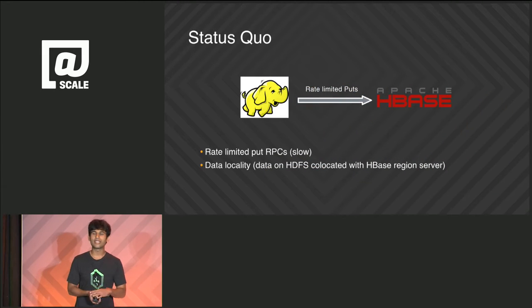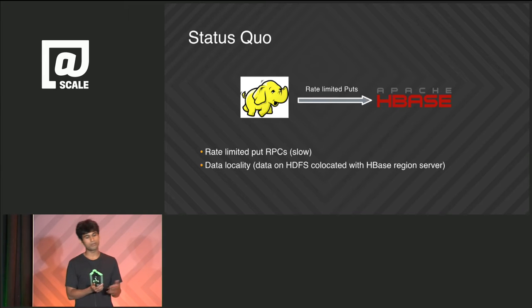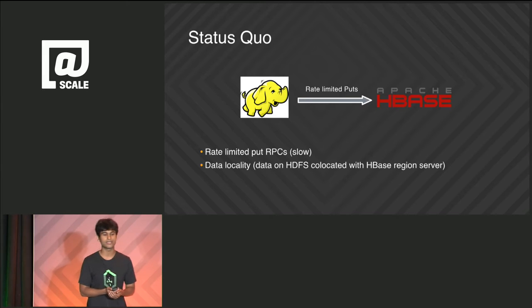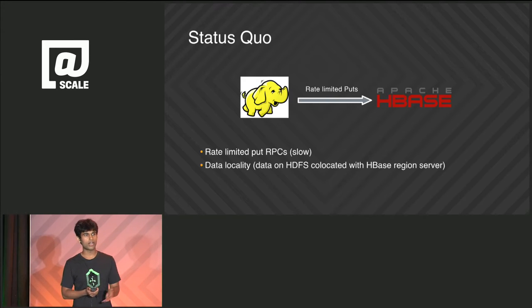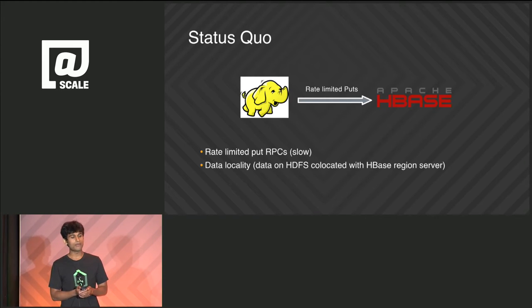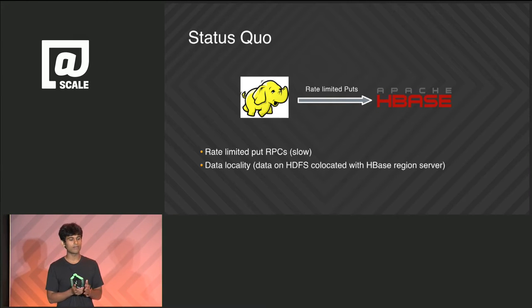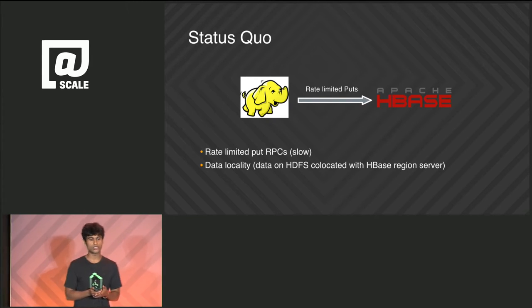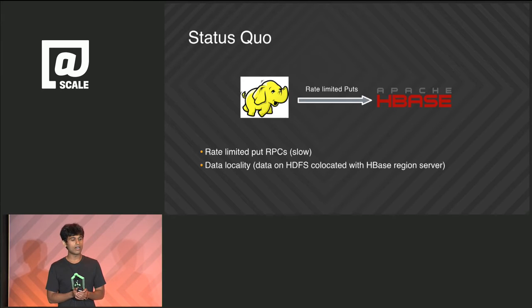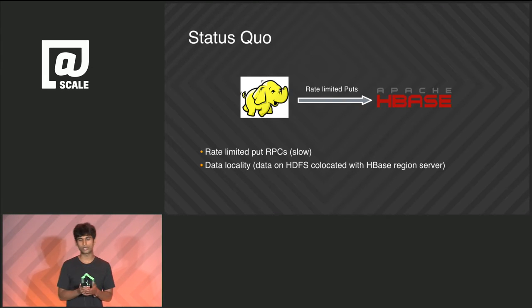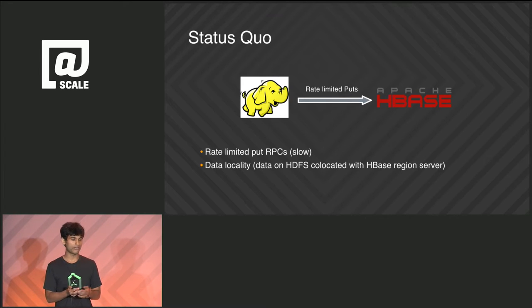Now I'll talk about some existing technologies we were previously using at Pinterest for serving this kind of data. We started off with our Hadoop jobs writing directly to HBase region servers through write RPCs. But we found that we had to severely rate-limit these RPCs since they were overloading our HBase clusters. The good part was that with HBase you can get good data locality — the data on HDFS is co-located with the HBase region servers, so latency was good. But the rate-limiting made it really hard for us to upload large datasets, so we could only deal with datasets which were a few tens of gigabytes.